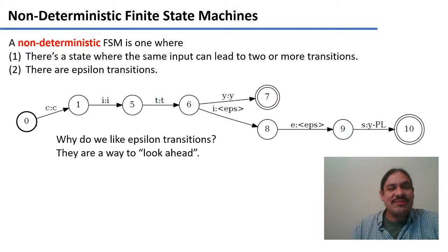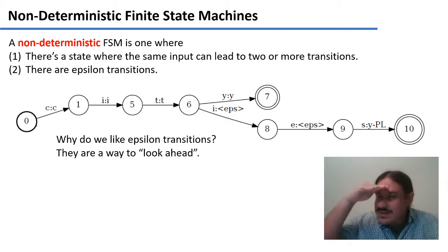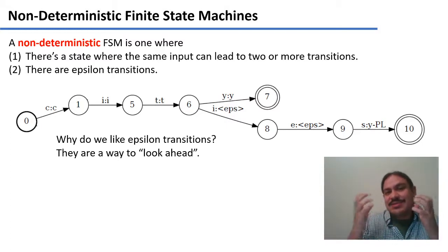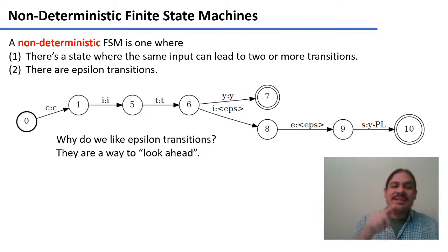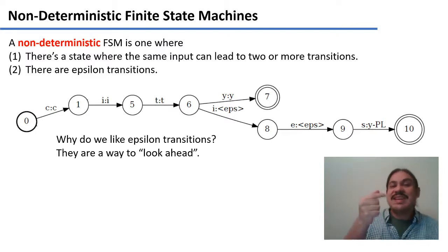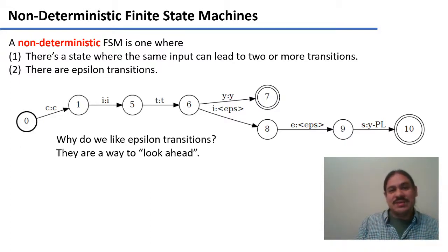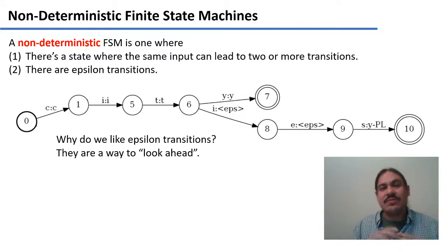Epsilon transitions are very useful because they allow you to cheat — they allow you to look ahead and in effect stand on two states at the same time. Here we have a finite state transducer for two words, city and cities. When you get city, it just returns the same word. And when you provide cities as input, it returns the morphemes of the word — city dash pl for the plural.